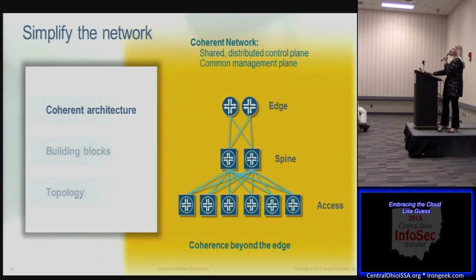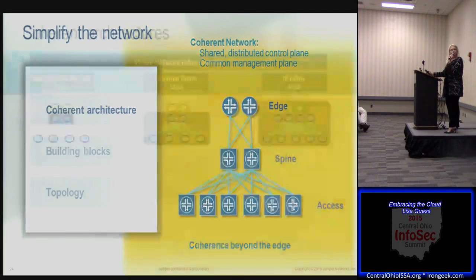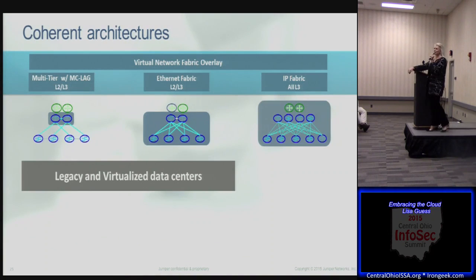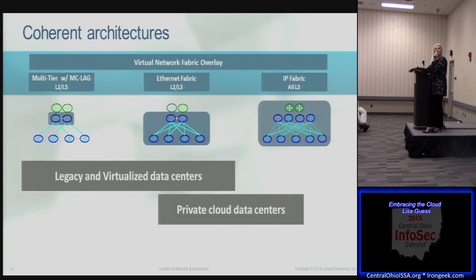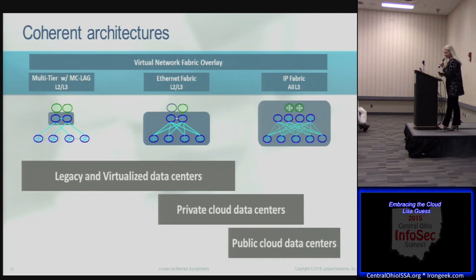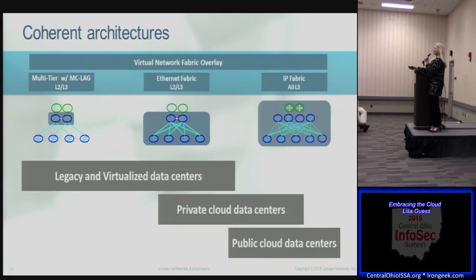Where do you use these different pieces? In a legacy or smaller private data center, multi-chassis LAG is a standard protocol widely used in common Ethernet switches. As you get into private cloud data centers and larger data centers, an Ethernet fabric fits well. And especially in the public cloud, IP connectivity becomes critical because now you're going over distance, connecting data centers, doing backups over distance — and you need the right foundation to do that.